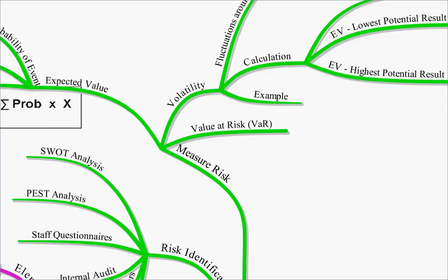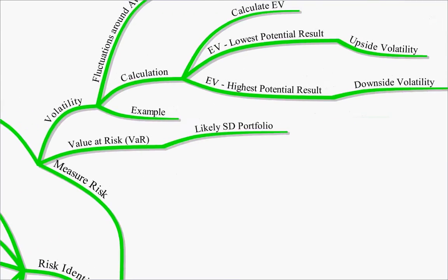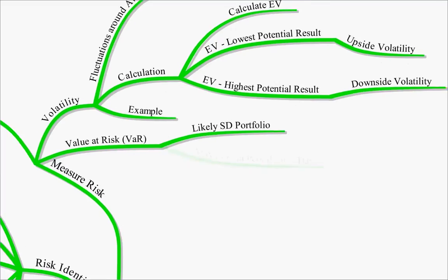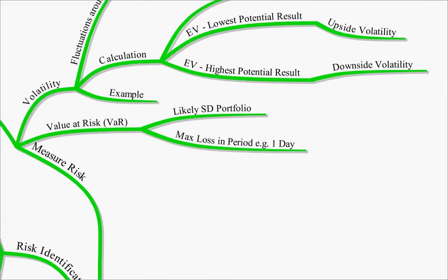Value at risk is a method for measuring the standard deviation of your portfolio. It determines the maximum loss that you're going to have in a period — for example, one day. Banks will use this when they have a portfolio of investments.